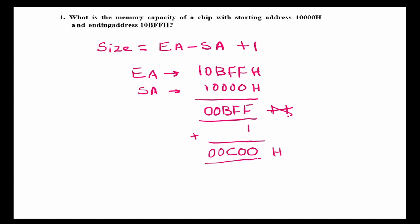So, convert this to decimal. This should be multiplied by 1 and this should be multiplied by 16 and this value should be multiplied by 256. So, 0 into 1, that will be equal to 0, 0 into 16, 0 and C is 12. So, 256 into 12.